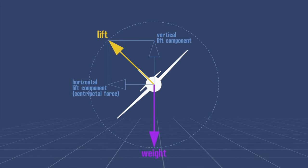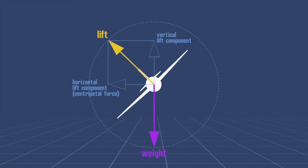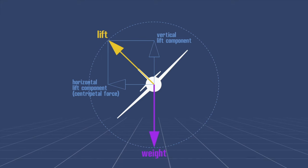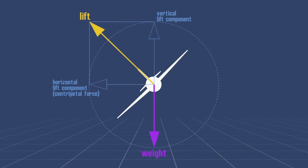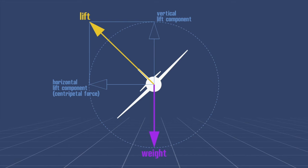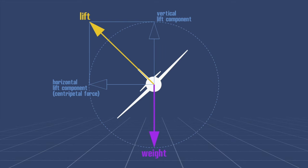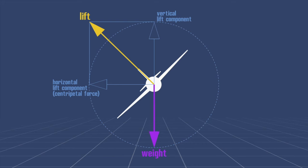The most practical way of increasing the vertical lift component is to increase the lift force. The pilot can achieve this by pulling back on the control column to increase the aeroplane's angle of attack.